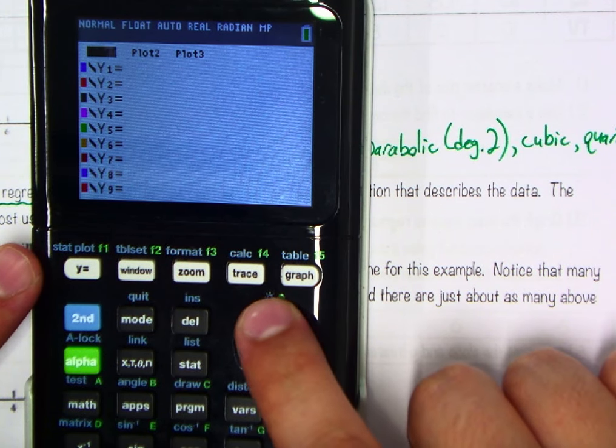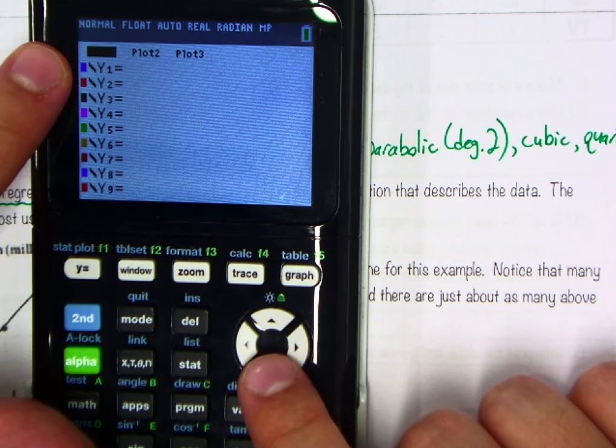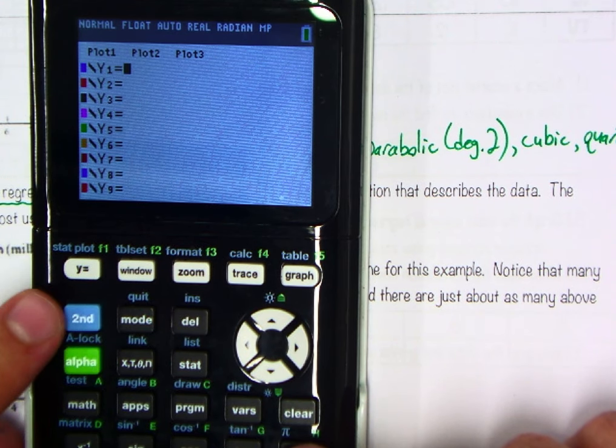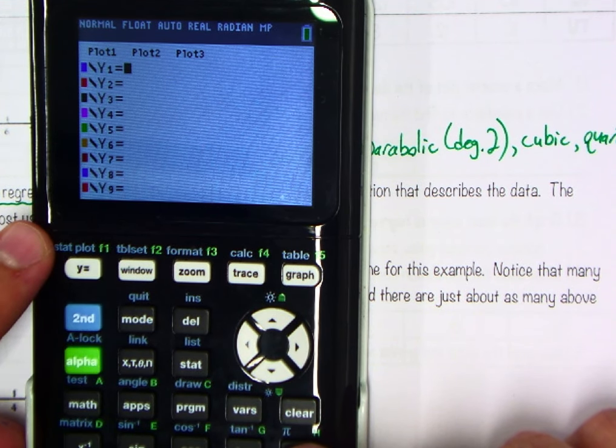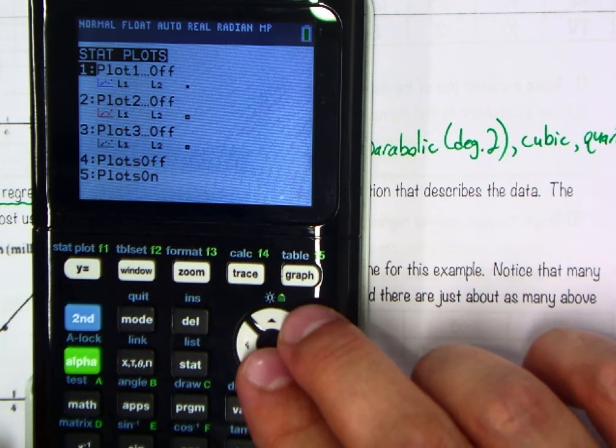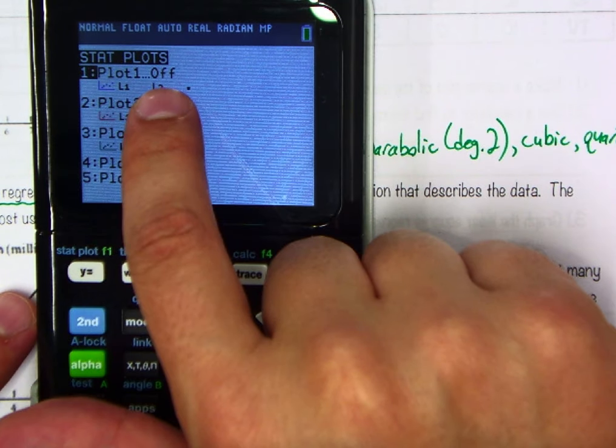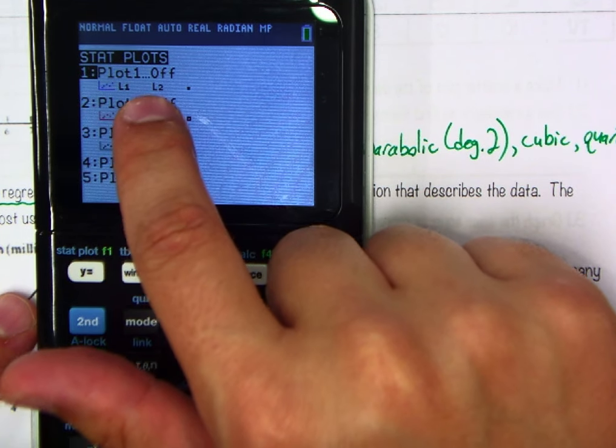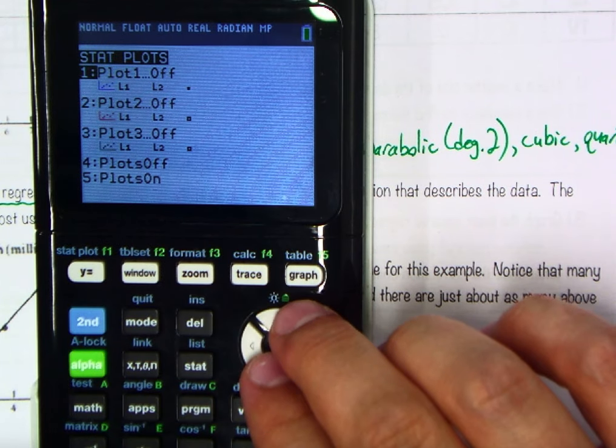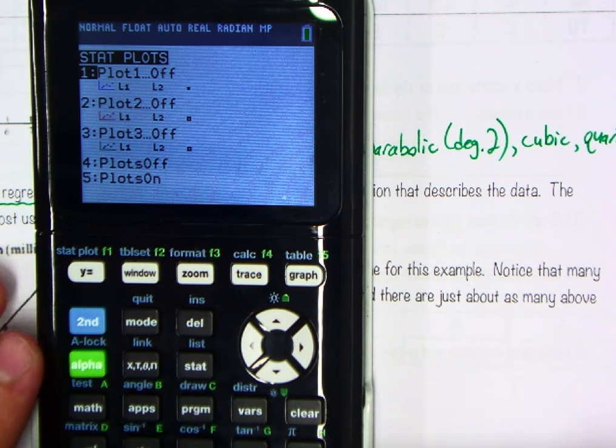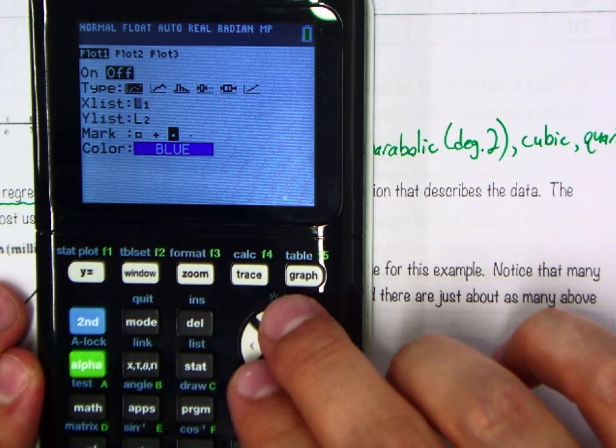So you could go up and just hit enter, but you don't really know what plot one is talking about yet. So let's go second y equals, and that'll take me to my stat plot feature. So here we go. Plot one is designated as list one, list two, which is perfect. Like I said, that should be the standard for everybody. If I just hit enter there, it'll take me, and I could adjust these.